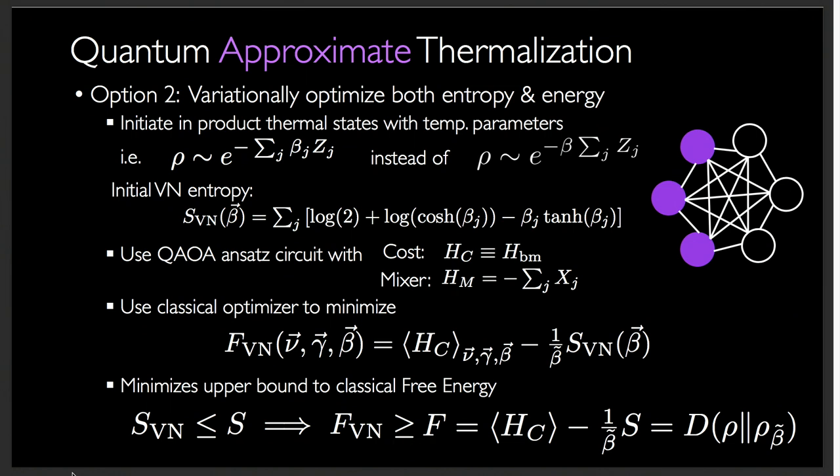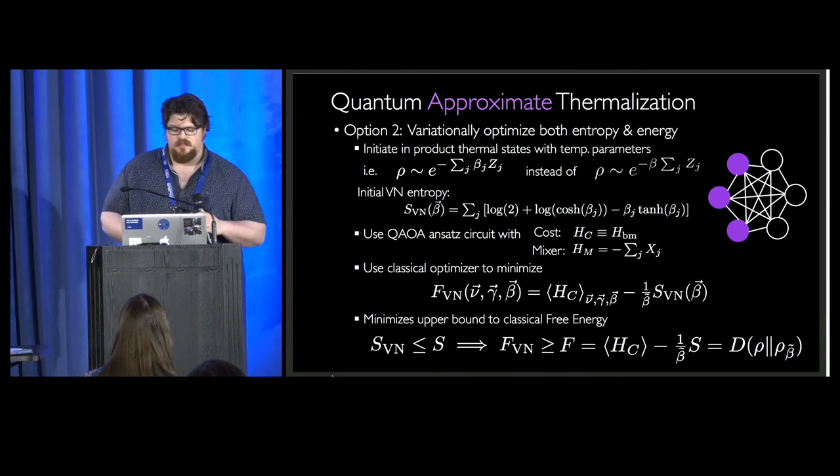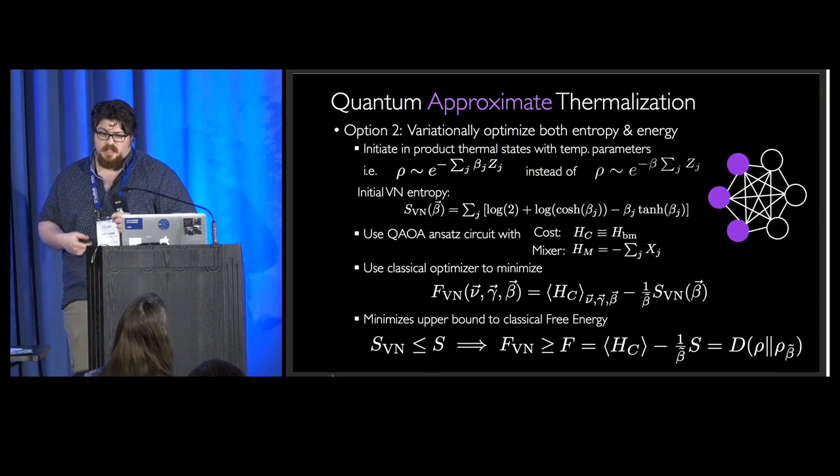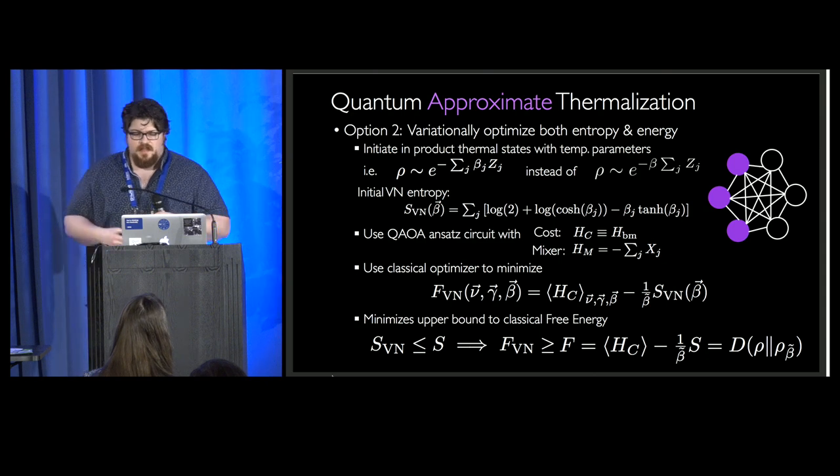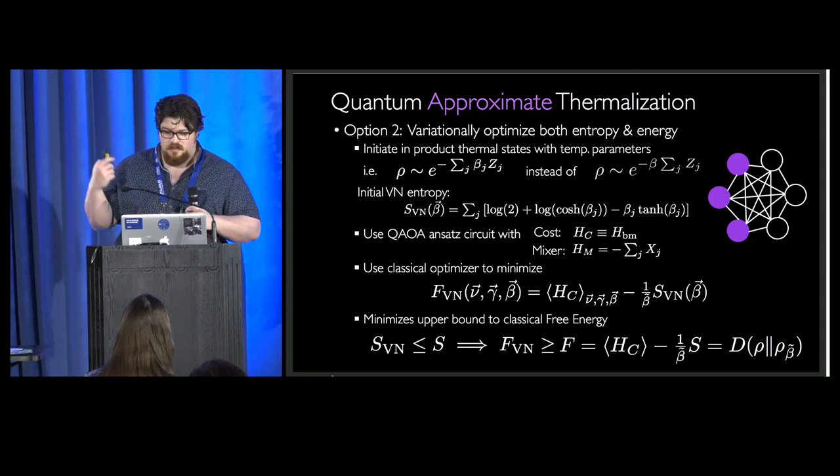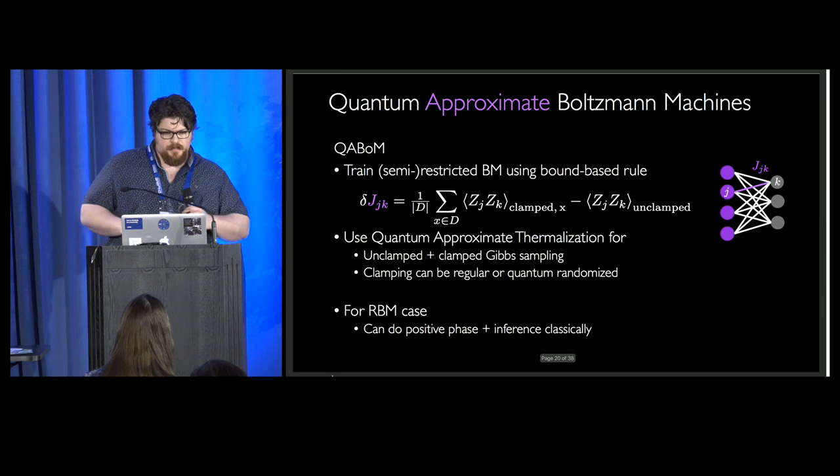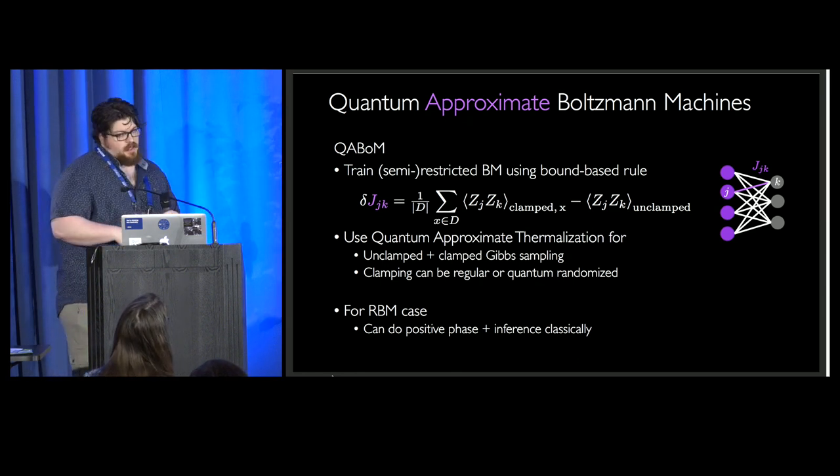Another one that's not in the paper yet, but it's variationally optimizing both the entropy and energy. In this case, you have a parameter for the temperature of each qubit at the beginning, and then you use the same QAOA. In this case, you know the von Neumann entropy going into the system. The von Neumann entropy is a lower bound to your actual classical entropy of the standard basis measurements. So then in a sense, you're minimizing a von Neumann free energy, which is an upper bound to the true free energy. So you have better odds of getting close to the thermal state because you're optimizing both energy and kind of maximizing entropy. But this has more parameters, which is less efficient to optimize. But I'll talk about a general algorithm that doesn't care how many parameters you have in it. It works really well.